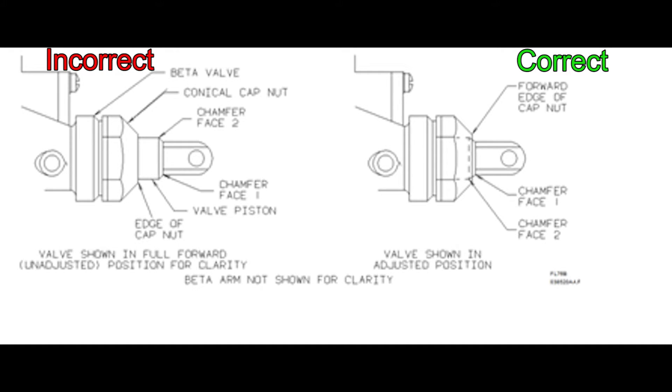Incorrect adjustment of the beta valve can result in unplanned feathering of the propeller leading to possible over-torquing of the engine and a possible hazard to airplane operation.